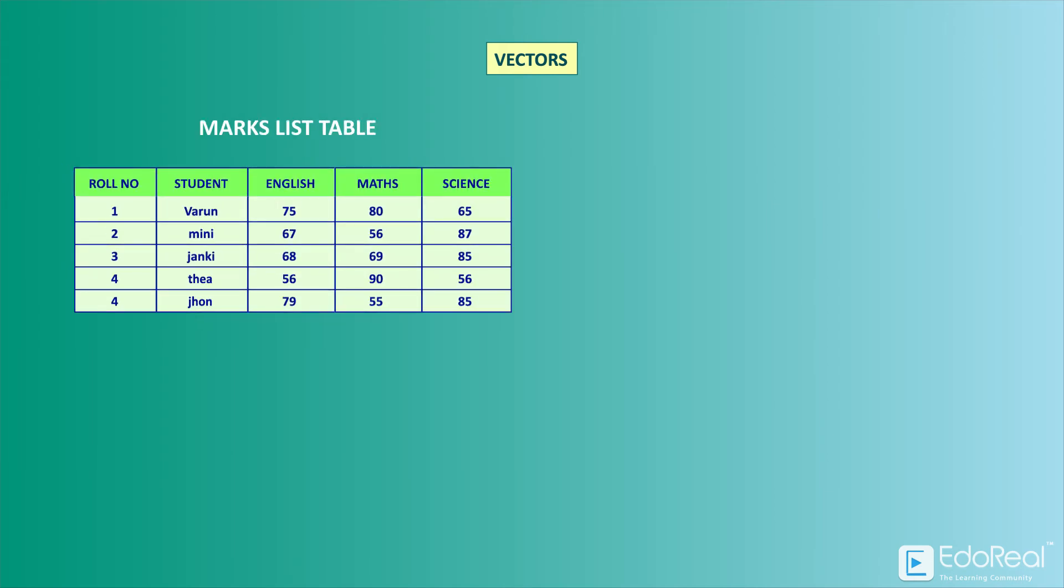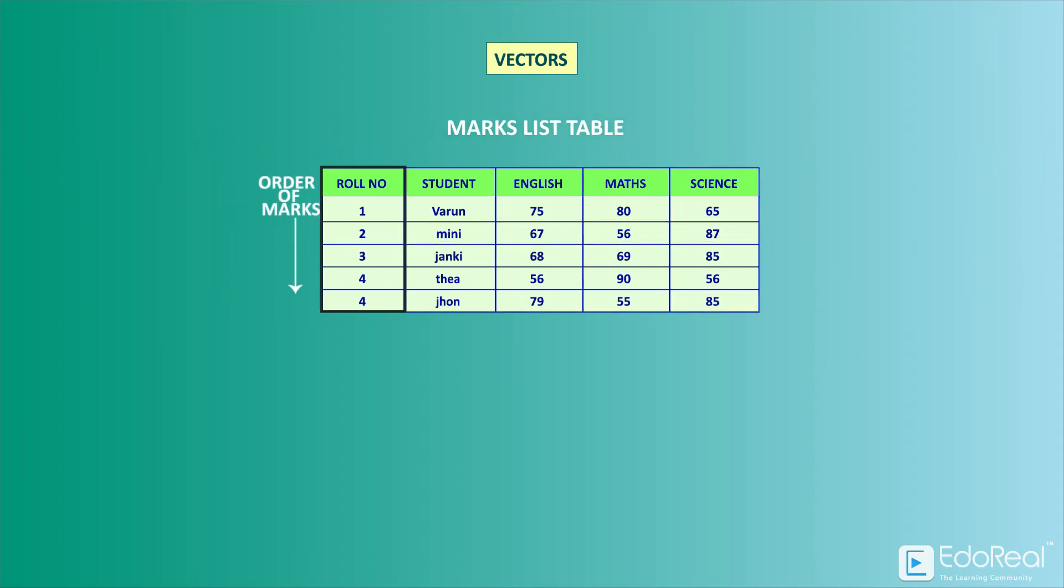Vectors. If we consider the marks list table, the order of subjects placed gives us a unique way to represent marks of individuals in an ordered array form. For example, marks of Varun and Mini can be represented as vectors. Similarly, the roll number gives a unique order of students that are placed in the table. Hence, the set for English represents marks of all students in English subject, in respective order of their roll numbers. The representation of a table can be converted into mathematical objects called vectors and matrices.